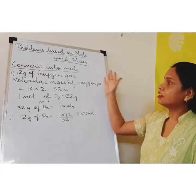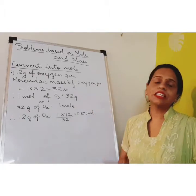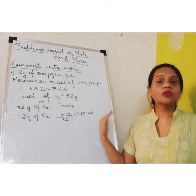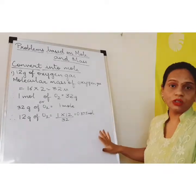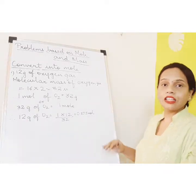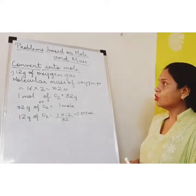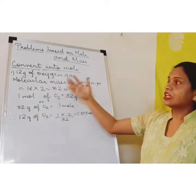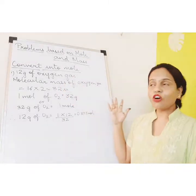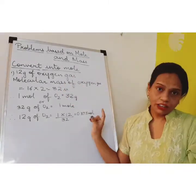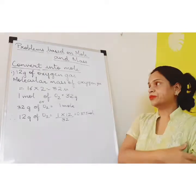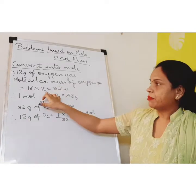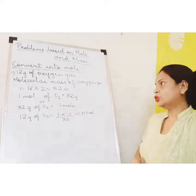Here 12 grams of oxygen gas is given. Remember yesterday I told you all about the formulas. Now when you convert it into moles, it is asking us to convert it into moles. Here it is given 12 grams of oxygen gas — not oxygen atom. So the molecular mass of oxygen we know is 16 multiplied by 2, which gives us 32.